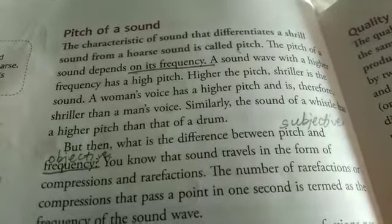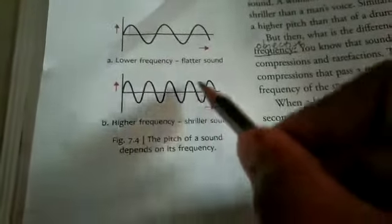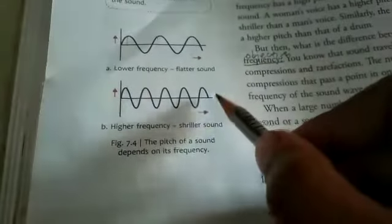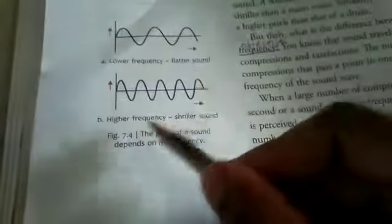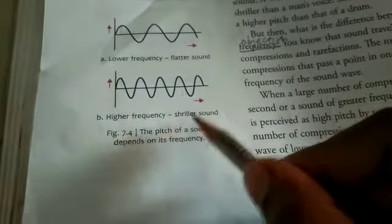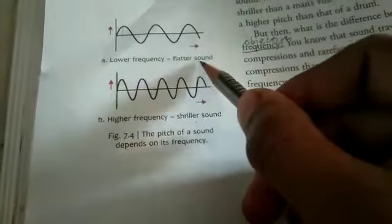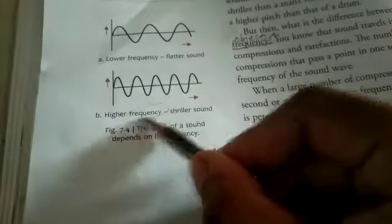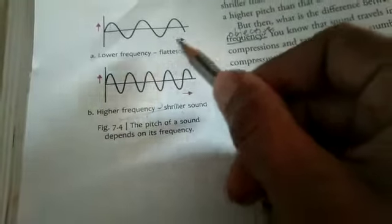Frequency is the number of waves formed in one second. More waves in a given interval of time means higher frequency; fewer waves means lower frequency. Higher frequency gives higher pitch and a shriller sound; lower frequency gives lower pitch and a flatter or hoarse sound. Pitch is directly proportional to frequency.